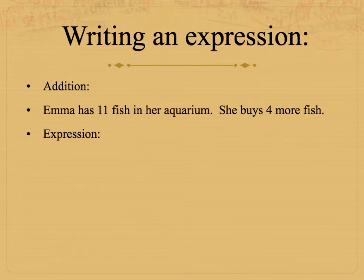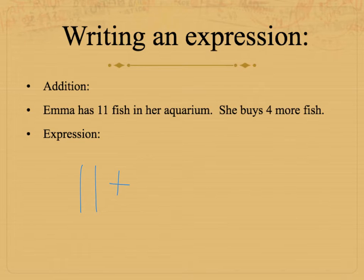Now that you know what an expression is, let's practice writing an expression. Emma has 11 fish in her aquarium. She buys 4 more fish. Write an expression to show how many fish Emma has. Take a second to write this expression in your notebook. Emma has 11 fish and she buys 4 more, which means she's adding to her fish collection. So all I would write for this expression is 11 plus 4. And remember, I am not putting an equal sign, because expressions do not have equal signs.